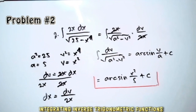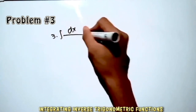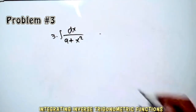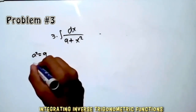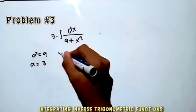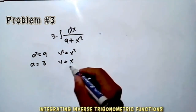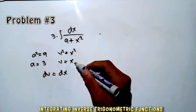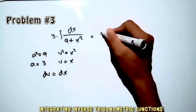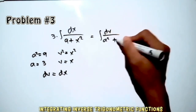Let's proceed to the third example: integrate dx over 9 plus x². This looks like the arctan formula. So a² = 9, and a = 3. And v² = x², so v = x. Taking the derivative of both sides, dv = dx. Substituting, we get the integral of dv over 9 (a²) plus x² (v²).